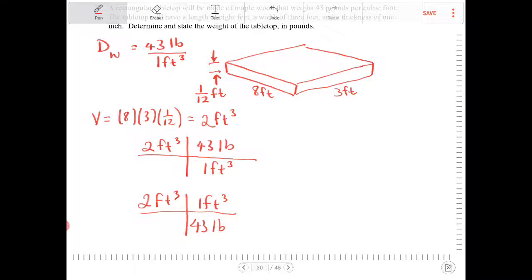But if I were to multiply across over here with this guy, notice that I have cubic feet both in the numerator and denominator. The cubic feet will therefore cancel. And then the only units left will be in pounds. So the final answer then will be 86 pounds. That's the weight of the tabletop.